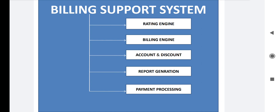Then there is the account and discount module in BSS. In this module, accounting and discounting checks whether any discount is applicable for the customer's services. The discount means giving money off. For example, if you have selected a New Year plan, then if any valid discount is applicable, it will be calculated and the rating and billing process will reflect that discount.